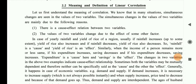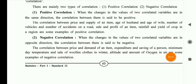There are two types of correlation: positive correlation and negative correlation. In positive correlation, the changes in the values of two correlated variables are in the same direction. If changes are happening in one variable and the other variable changes in the same direction, it is positive correlation. If they change in opposite directions, it is negative correlation.